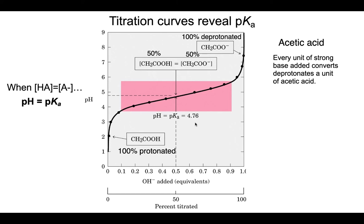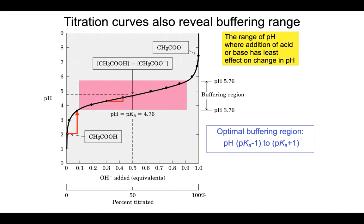Another thing illustrated here is that acetic acid, or all weak acids for that matter, can work as a buffer. Buffers minimize changes in pH — if you add some acid or base to a buffered solution, the pH isn't going to change very much. Acetic acid can work as a buffer, but it doesn't work as a buffer at all pHs. At pH 2, when you add just 0.1 equivalents of strong base, look at how far up the pH goes — from 2 to almost 4, almost 2 units. That is most definitely not acting as a buffer.